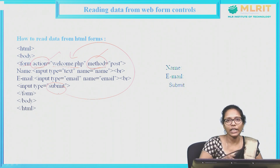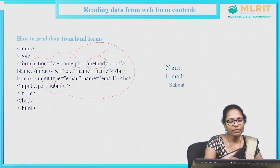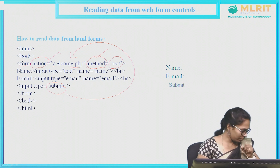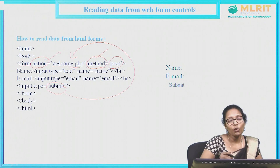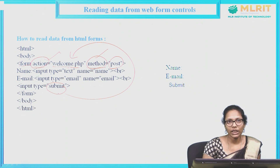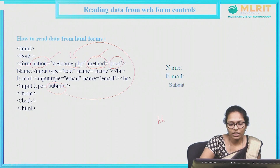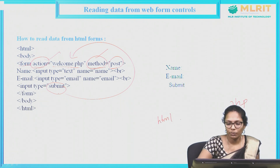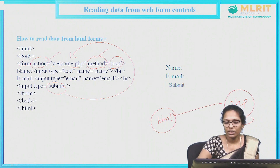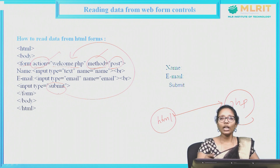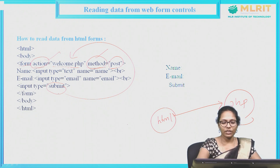There is another attribute here: method. The method value I am giving as post. Whatever data you fill in this HTML form, it is going to reach the PHP. This is your HTML form and this is your backend PHP. Whatever data you are writing, it is going to transfer like this. How this data will be transferred? We have two different types of methods — one is GET and the other one is POST.